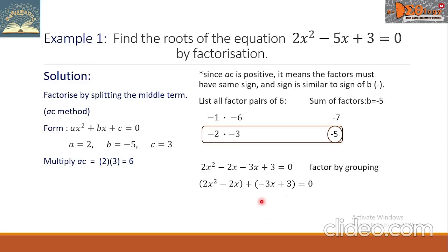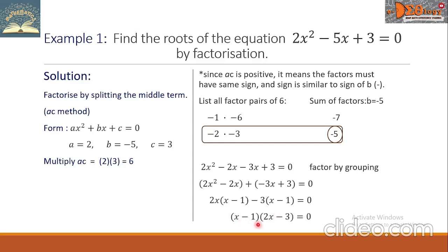For each group we factor out the greatest common factor. In the first group the GCF is 2x, leaving (x - 1). In the second group the GCF is -3, leaving (x - 1). Both groups share the common binomial factor (x - 1). Factoring it out gives us (x - 1)(2x - 3), which are the factors of 2x² - 5x + 3.